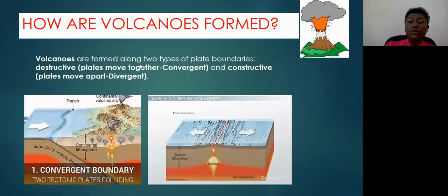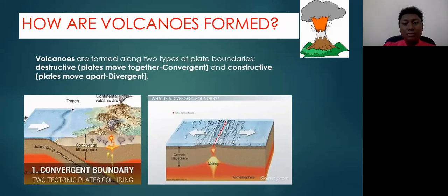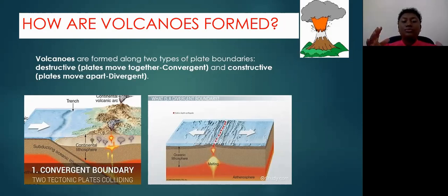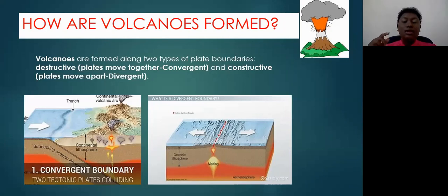Volcanoes are also formed along two plate boundaries or plate margins. Remember that the plate margins are the edges of the plates, and at the edge of these plates you have tectonic activity, so you can have earthquakes and volcanoes. Volcanoes are formed along two of the three plate margins: first, they're formed along destructive plate margins, which are also called convergent plate margins.